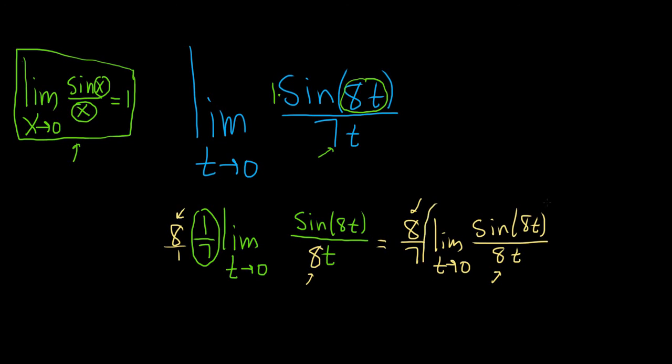So this piece here, we can apply the formula now because these pieces match. You see this is the same as this, and it's approaching 0. So this is 8 7ths times 1, which is equal to 8 7ths. And that would be the final answer. I hope this video has been helpful. Thank you.